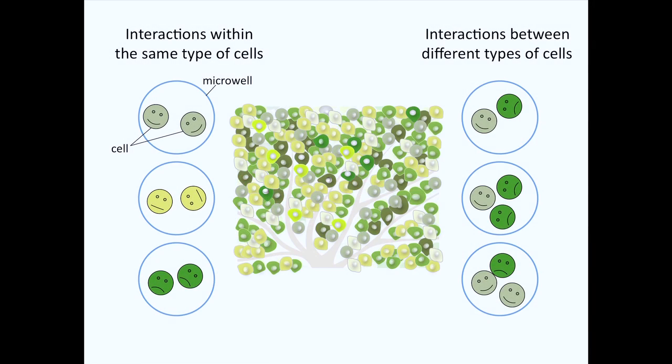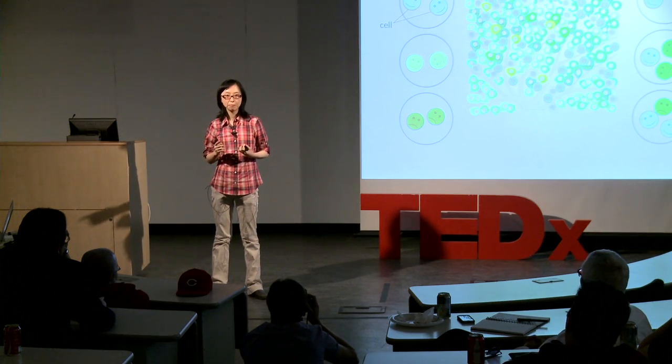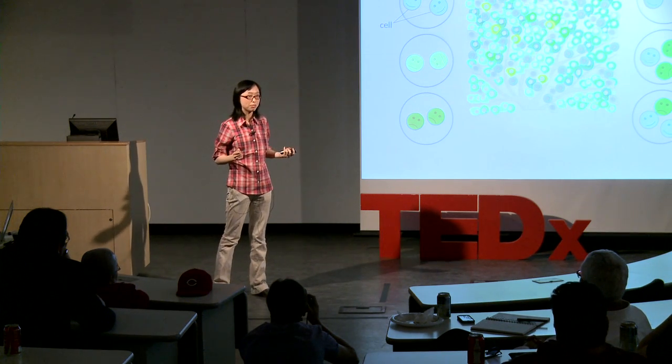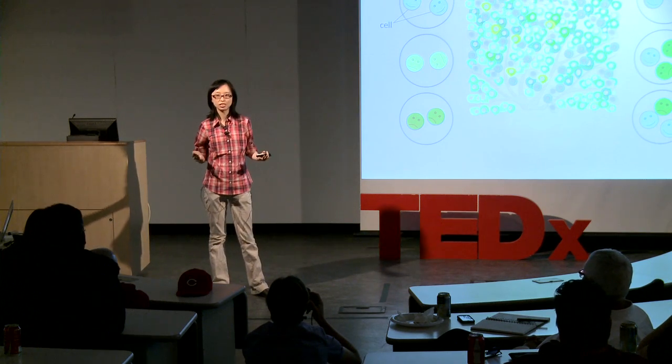Then we might start to wonder: in a tumor tissue society, how do those cells differ from each other and how do cells talk to their neighbors? What is the population density of cells in the cancer cell community? Do you know how many cells are there in the tumor tissue of one cubic centimeter — about the size of a peanut? One to ten billion cells — billions starting with a B. It is hard to imagine how many interactions are taking place at the single cell level.